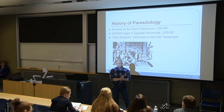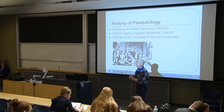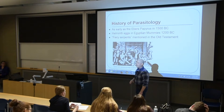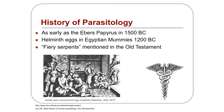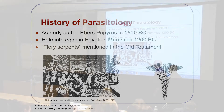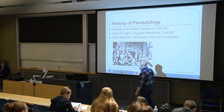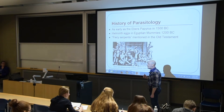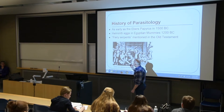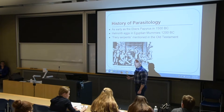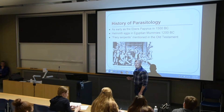The history of parasitology is actually very interesting and has a very early history. You can actually trace parasitology back to the ancient Egyptian medical document called the Ebers Papyrus, back in 1500 BC, which contains descriptions of parasitic diseases. There's documentation that helminth eggs have been found in Egyptian mummies from 1200 BC. Many scholars have widely accepted that the fiery serpents mentioned in the Old Testament are actually guinea worm, which is a parasitic nematode.